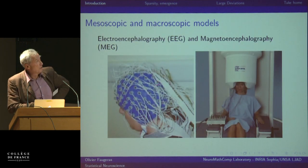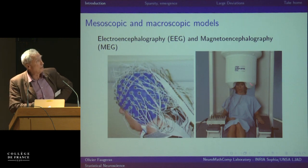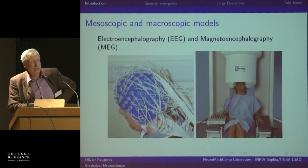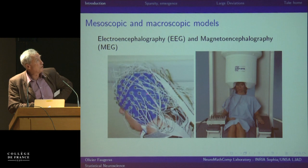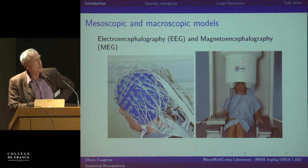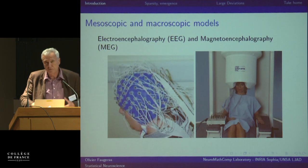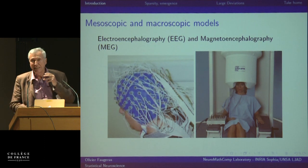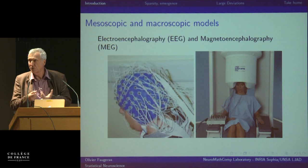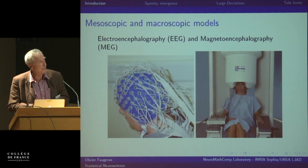Higher up the ladder of scales, EEG (electroencephalography) or MEG are two modalities which allow you to measure the electrical and magnetic activity of the human brain non-invasively. Due to diffusion of electromagnetic waves created by brain activity, what you measure at the electrodes is the activity of millions of neurons. We definitely need ways to represent the activity of neuronal populations at different spatial scales.